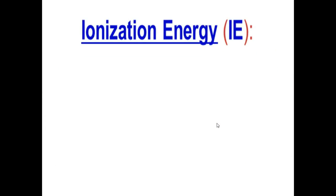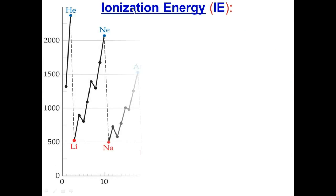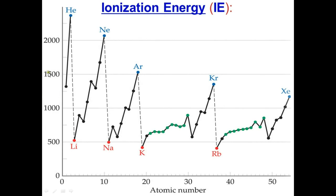The next trend is ionization energy. Here's a chart where each line represents a period — period one through five. As we go down the periods, ionization energy decreases. The noble gases helium, neon, argon, krypton, and xenon sit at the peaks, and the energy is decreasing as we go down.